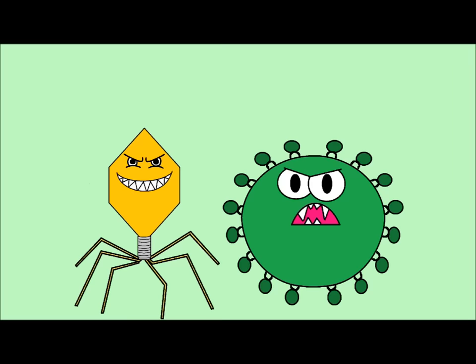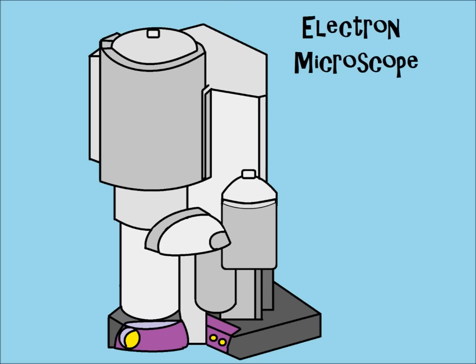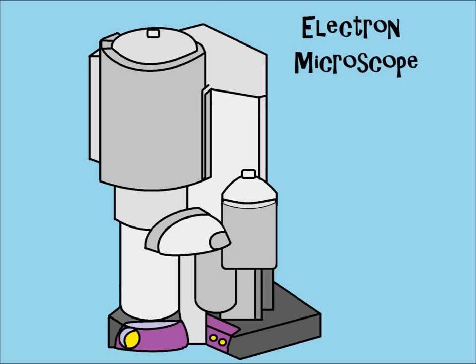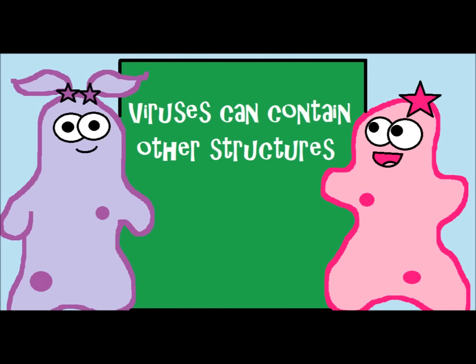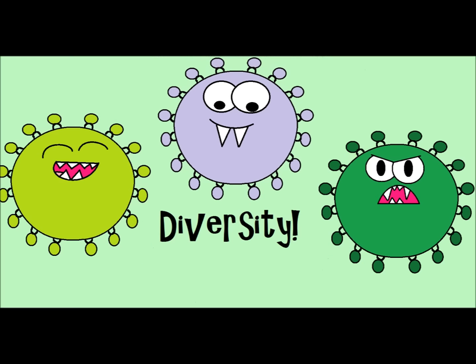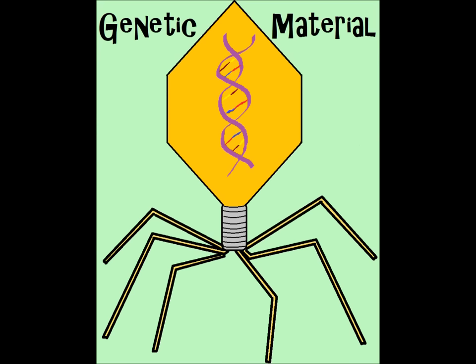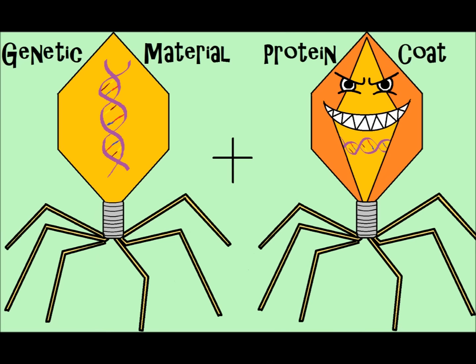Viruses are also very, very small — much smaller than bacteria. You typically need an electron microscope in order to see a virus. Viruses can also contain other structures: some package special enzymes with them, and some viruses have an outer envelope. There are different varieties of what viruses can have, but the main features are genetic material and a protein coat, also known as a capsid.